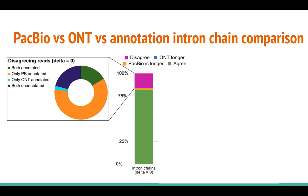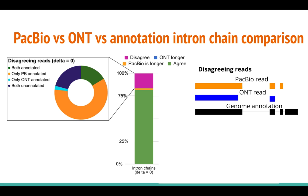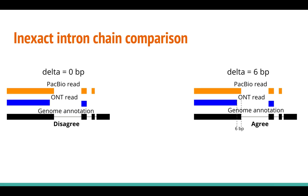This suggests that PacBio alignments unsurprisingly give more precise splicing structure. Here is an example of disagreeing reads: the first exon is shorter in the ONT read and doesn't match the annotation. This analysis was done by exact comparison of splice site coordinates. However, we know that in nanopore alignments, splice junctions may be detected with some minor shifts, so we decided to perform inexact comparison, where splice junctions are considered equal if the distance between them doesn't exceed some delta.